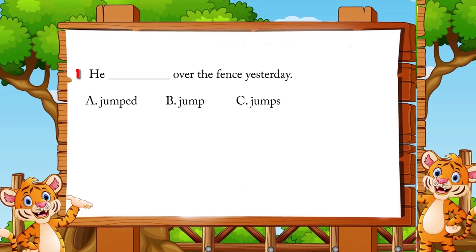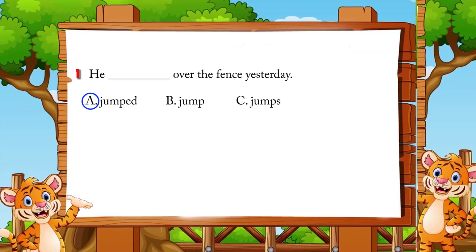Number one: 'He blank over the fence yesterday.' A. Jumped, B. Jumped, C. Jumped. The answer is B: jumped. Jumped is a regular verb, so it adds -ed.